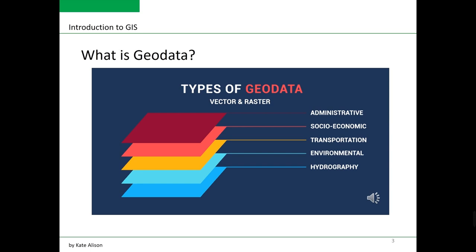What is Geodata? Geodata is location information stored in geographic information systems. By viewing data with a geographic component, we see it through a different lens.